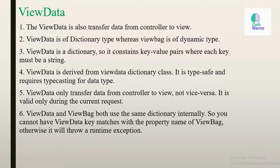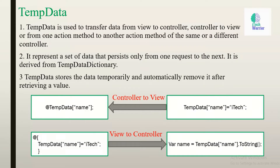Fifth point: ViewData only transfers data from controller to view, not vice versa, and is valid only during the current request. Sixth point: ViewData and ViewBag both use the same dictionary internally, so you cannot have a ViewData key match with a property name of ViewBag, otherwise it will throw a runtime exception.